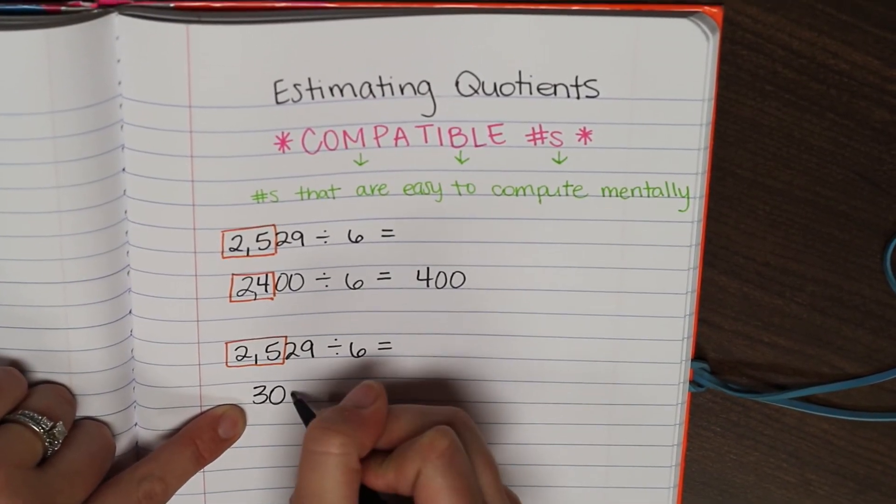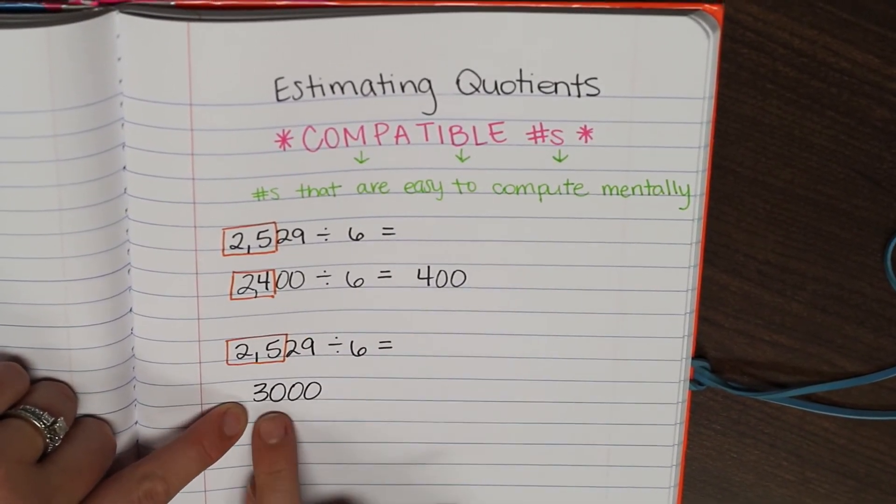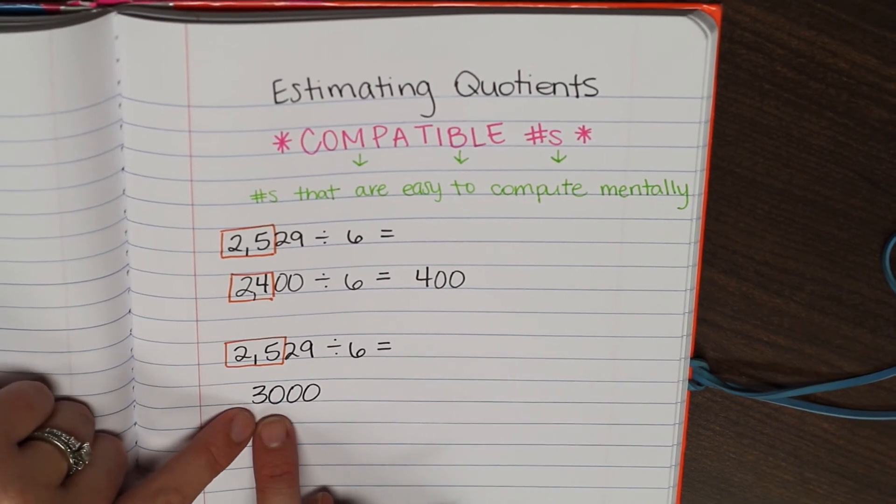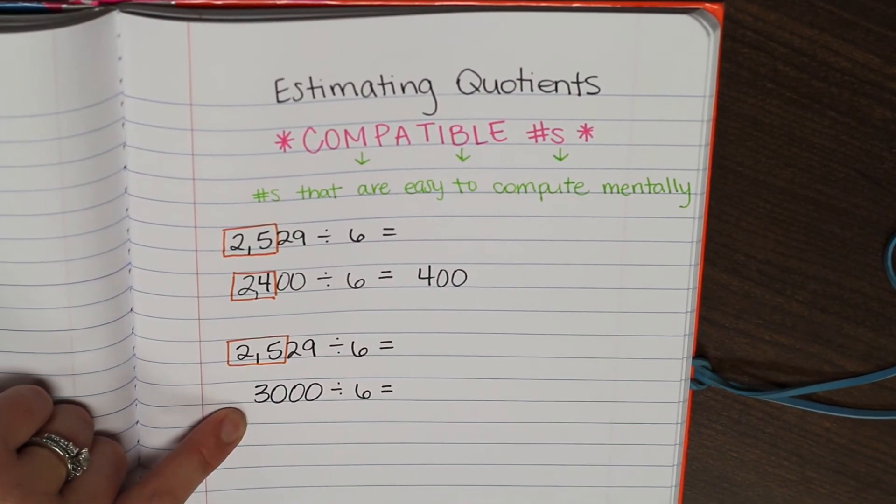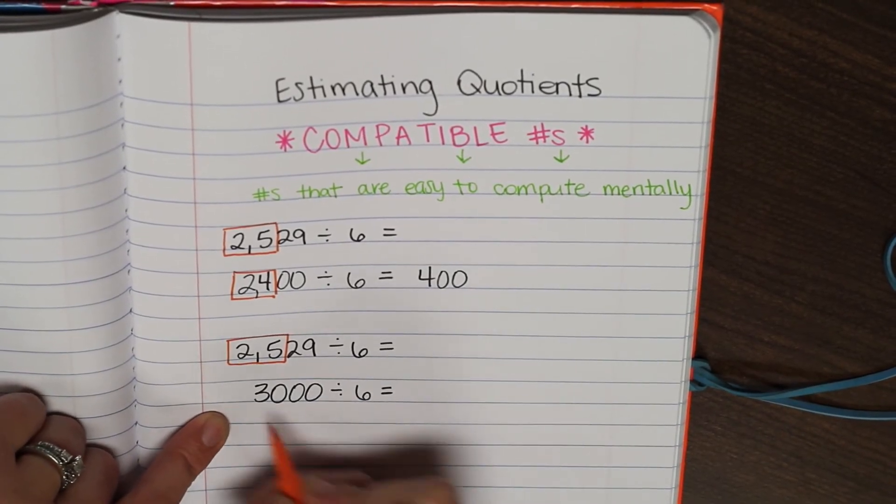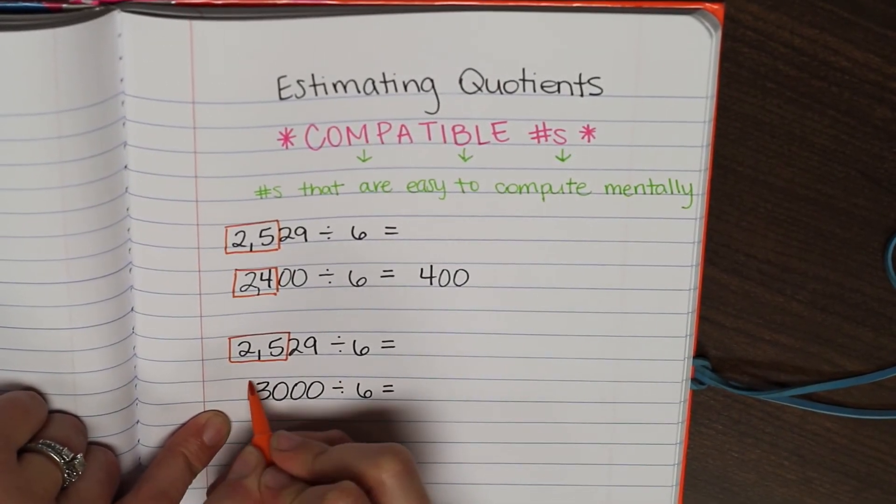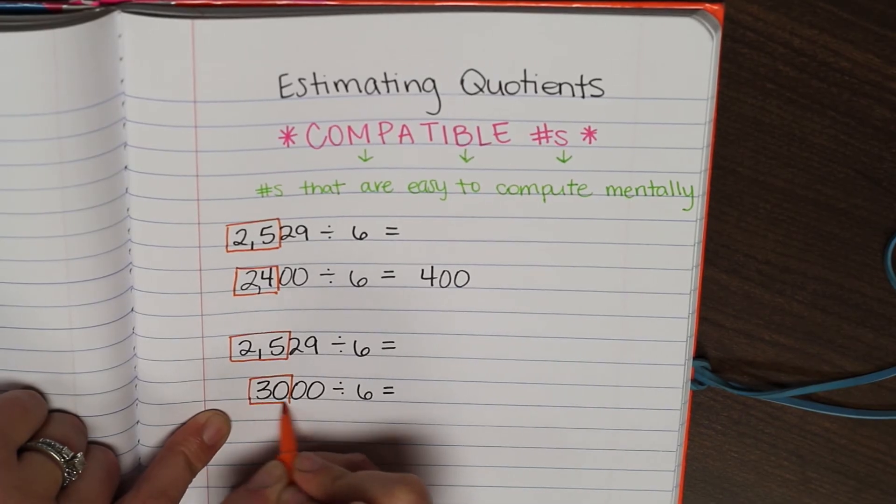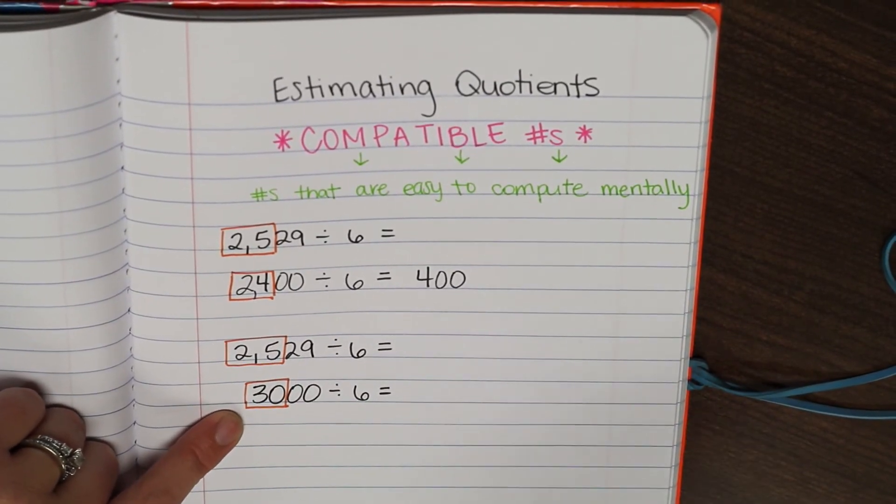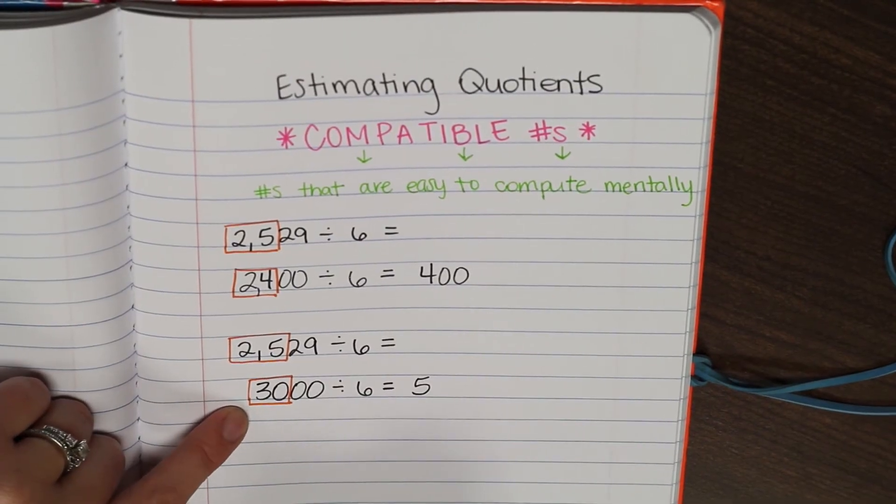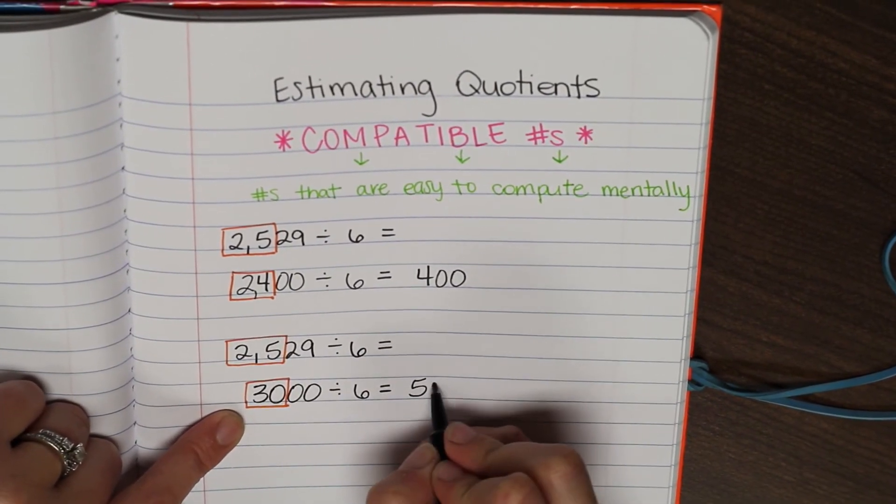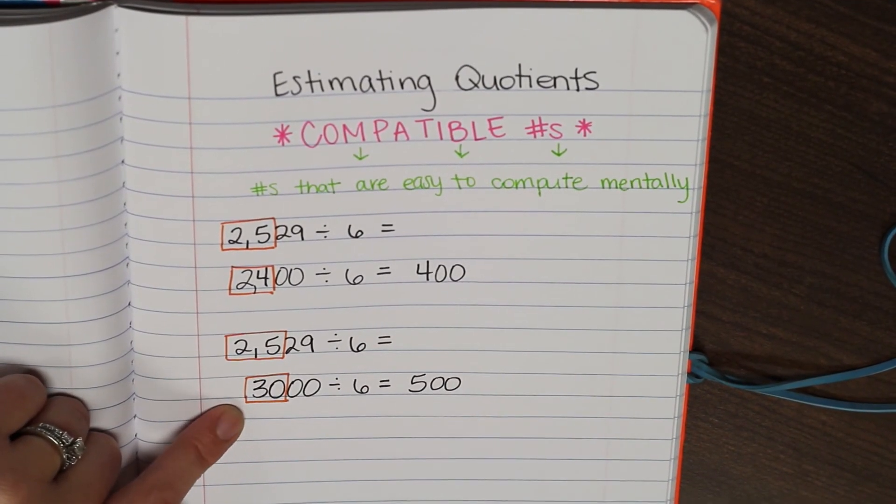And then we're going to add our two zeros to round up to 3,000. 3,000 divided by 6 is easier to compute than our original question. So let's think of 30 divided by 6 is 5. And then we're going to rename our two zeros after our 5.